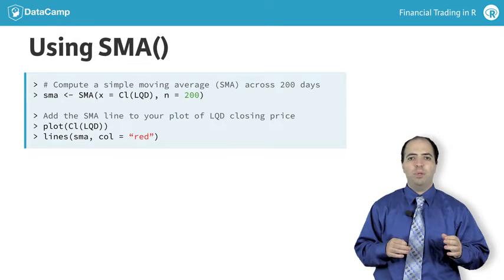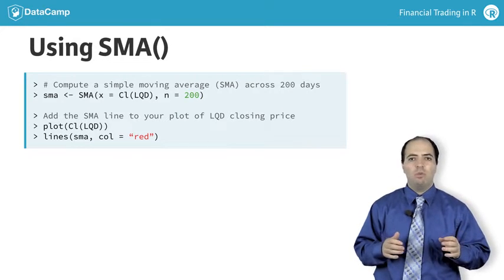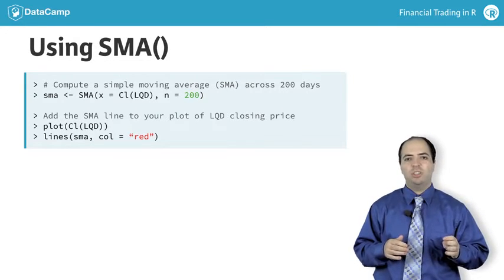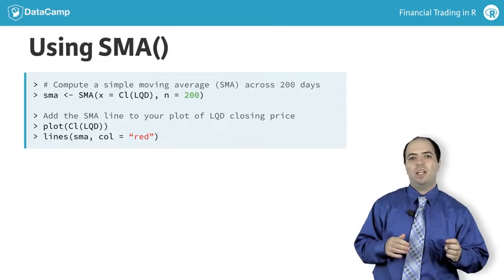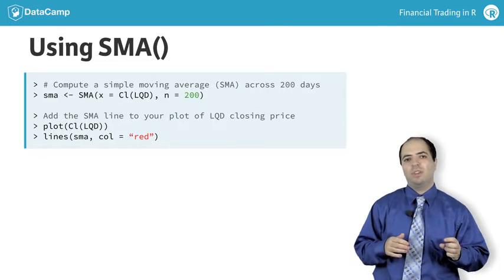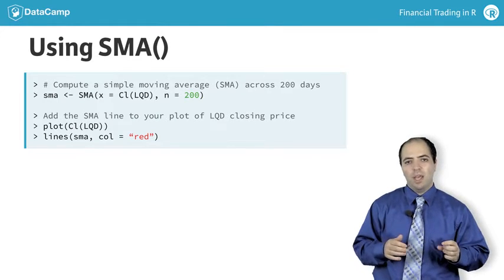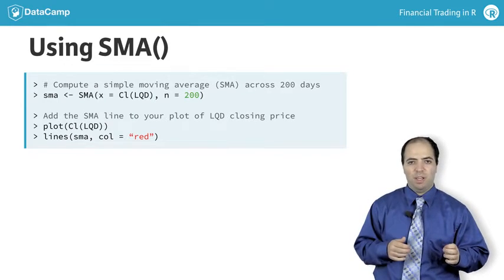Here's the code on how to compute the 200-day moving average. When plotting financial data, a trend line can be added using the lines command after plotting, as this displays.